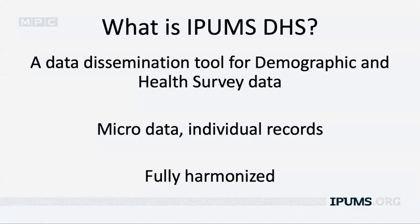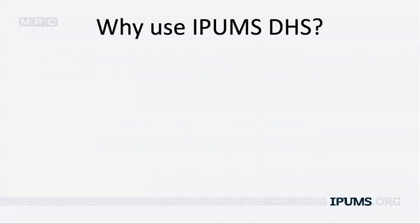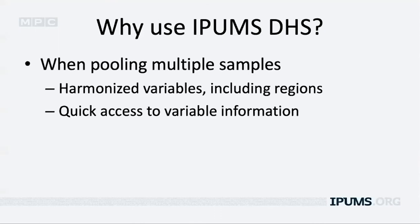Let's start with an introduction to DHS. IPUMS DHS is a data dissemination tool for demographic and health survey data. It's microdata, meaning individual records and not aggregate statistics, with fully harmonized variables. You can get DHS data directly from the DHS program website, but one reason to use IPUMS DHS is when you're pooling multiple samples, because of the harmonized variables including the harmonized regions, which are one of the most valuable things in the dataset.